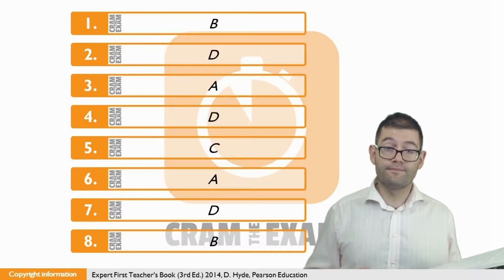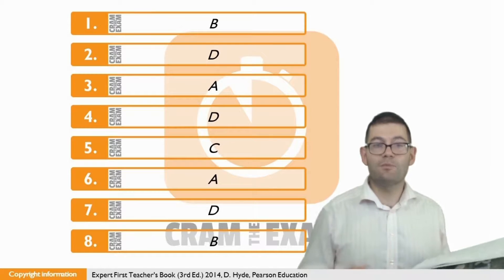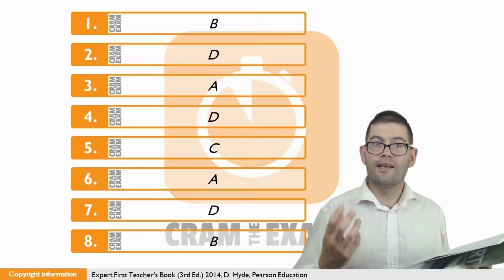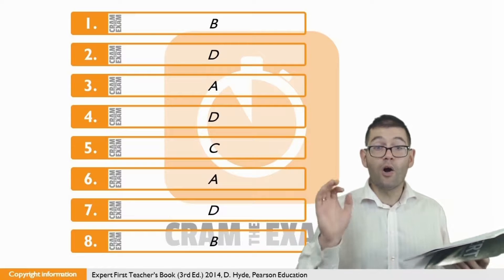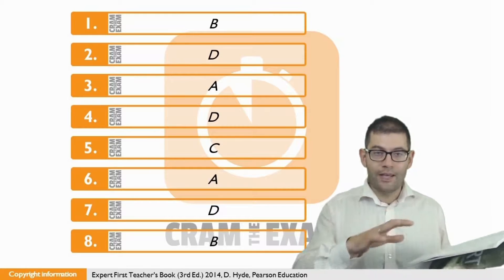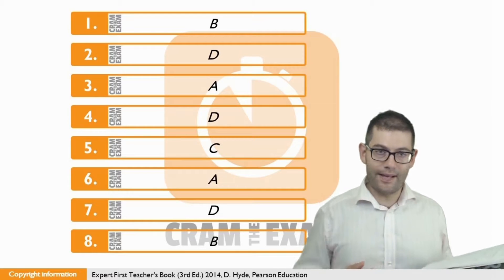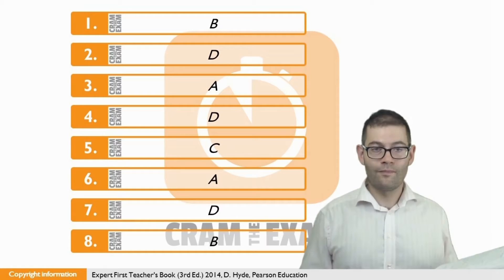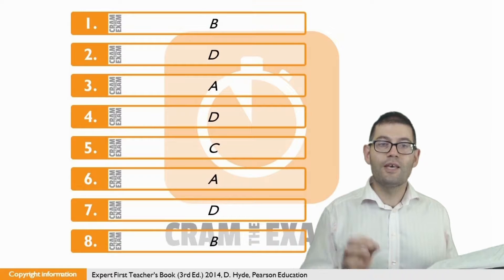For question number seven, what we need here is a piece of vocabulary that basically means the source of something or where something comes from. We've also got to take into account the preposition of after the gap. If we put all of those things together, the only answer that does fit that language pattern and collocates with of is D, root.